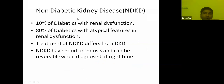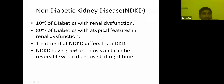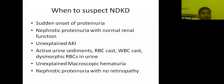It is said that 10% of diabetics with renal dysfunction will have non-diabetic kidney disease. And among the suspicious group — those with atypical features that don't fit the pattern of diabetic kidney disease — almost 80% might have non-diabetic kidney disease. The importance is that the treatment of non-diabetic kidney disease differs from that of diabetic kidney disease, and most non-diabetic kidney diseases have good prognosis and can be reversible if diagnosed in time.